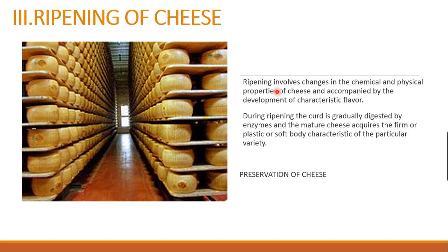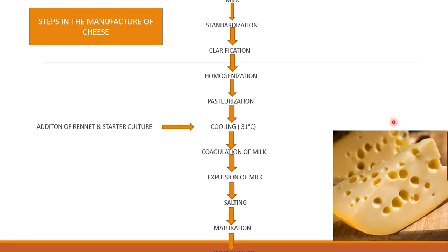Ripening involves changes in the chemical and physical properties of the cheese accompanied by the development of a characteristic flavor. During ripening, the curd is gradually digested by enzymes, and mature cheese acquires a firm, plastic, or soft body characteristic of the particular variety. After ripening, preservation is carried out.